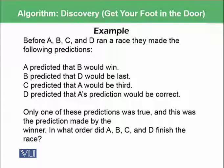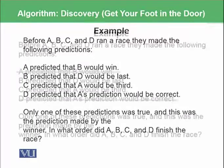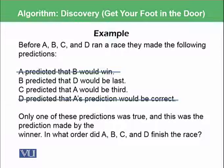So if you look carefully, the first statement and the last statement - A predicted that B would win and D predicted that A's prediction would be correct. As this problem is saying that only one of the statements could be true, this means we can reject the first and the last statement because they mean the same thing. So we are left with two statements.